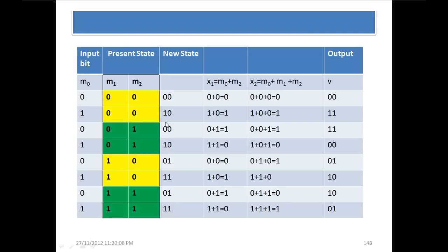Suppose the present state is 01 and the input bit is 0. In that case the output will be 11. The 0 is moved to M2, the previous M2 value is discarded, and 0 is moved to M1, so the new state is 00.